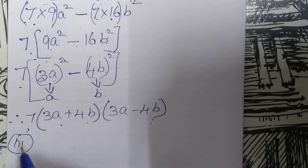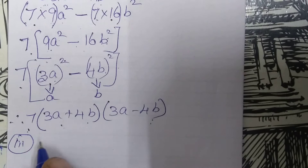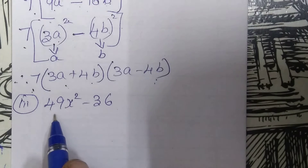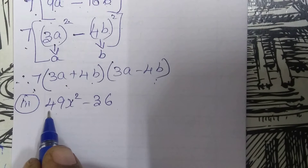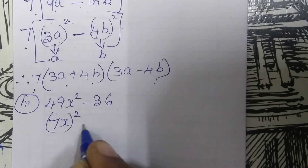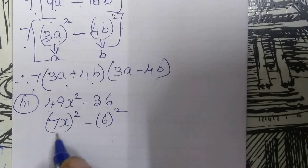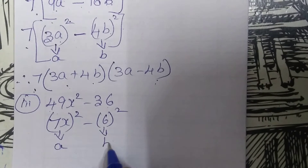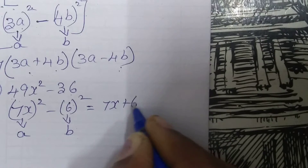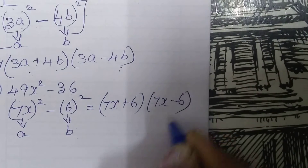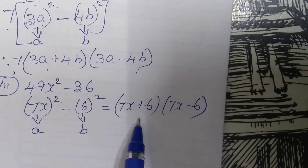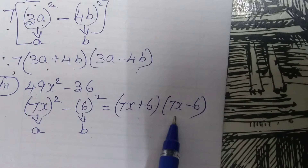Third subdivision: 49X squared minus 36. Here 49 is a perfect square and 36 is also a perfect square. We write it as 7X whole squared minus 6 squared, which is in the form A squared minus B squared where A is 7X and B is 6. So the factorization is 7X plus 6 multiplied by 7X minus 6.